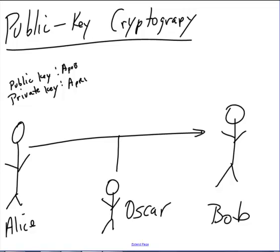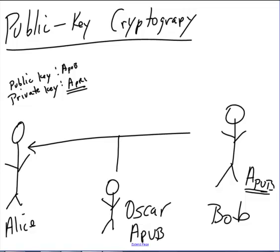Alice publishes her public key so that anybody on the internet — Bob and Oscar included — have a copy of that key. In this scenario, Bob is sending to Alice. Bob encrypts a message to Alice using her public key. Alice is the only one who can decrypt it, which she does with her private key. She keeps her private key secret so that only she knows it. Bob or Oscar or anybody can create an encrypted message and send it to her, but she's the only one who can decrypt it. By having this private key, she always knows the message was intended for her.